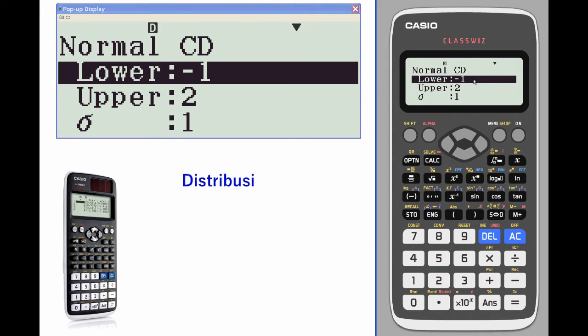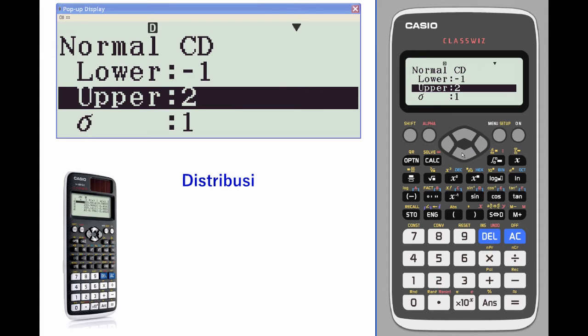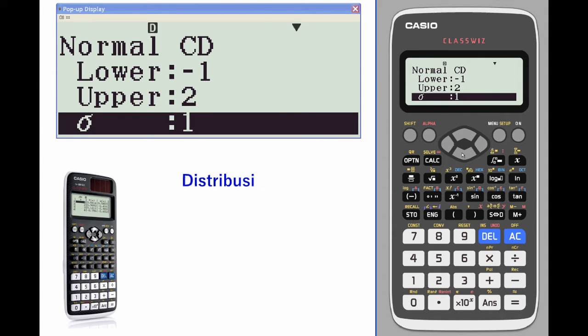If you want to look at the lower value going to the left forever, put in a large negative number. Same thing for upper if you want to look for area to the right, with a standard deviation of one and a mean of 1.5.